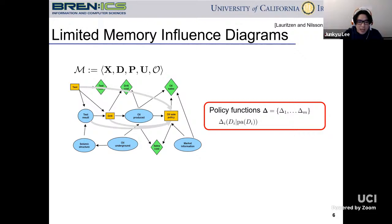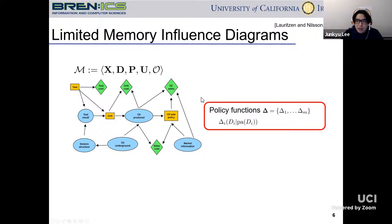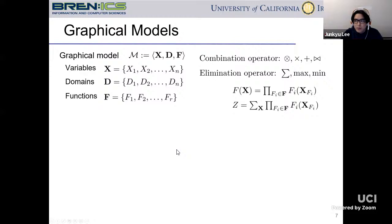When it comes to limited memory influence diagrams, we relax the assumption that the agent will never forget the past. Here, the gray arcs injecting into the decision variables are removed — we allow the agent to forget the past. In that case, the policy functions depend not on the full history but on the direct parents of the decision variables. In this talk, unlike conventions in influence diagrams, I will assume that all informational arcs are explicitly available in the diagram. For limited memory influence diagrams, we simply omit those arcs.